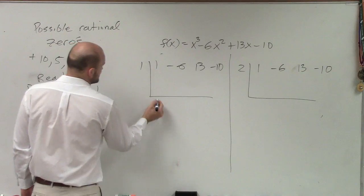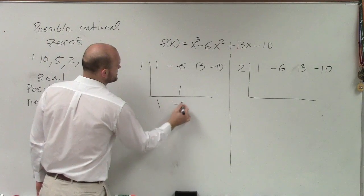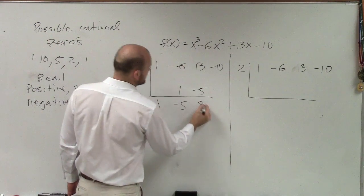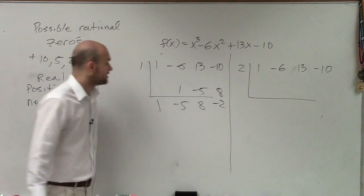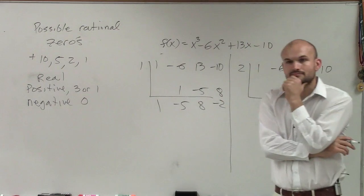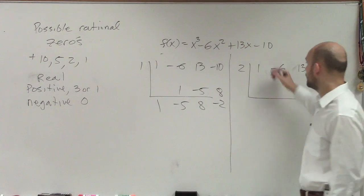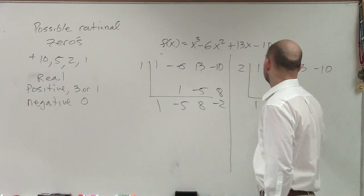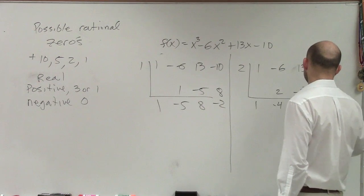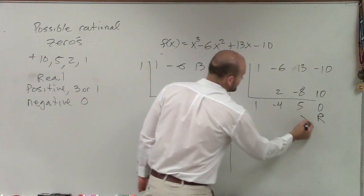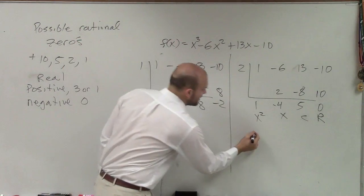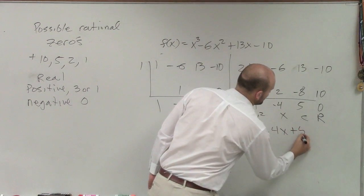Let's do synthetic division. Testing x=1: bring down 1, 1 times 1 is 1, that becomes negative 5, negative 5 times 1 is negative 5, that's 8, 8 times 1 is 8, remainder is negative 2. So 1 is not a zero. Now testing x=2: bring down 1, 1 times 2 is 2, negative 4, negative 8, positive 10, remainder is zero. So we have a quotient of x squared minus 4x plus 5.